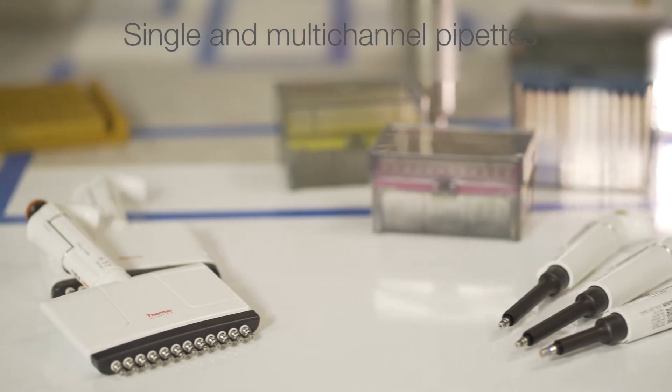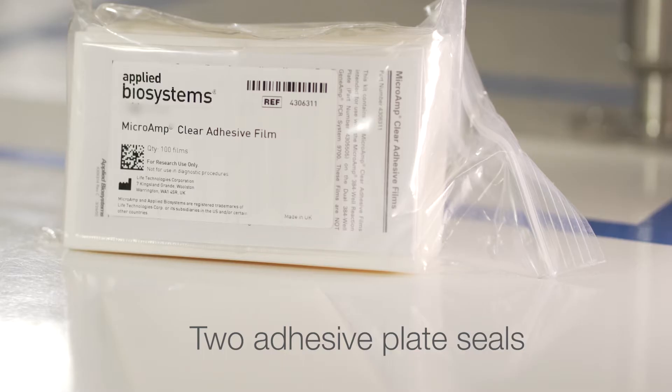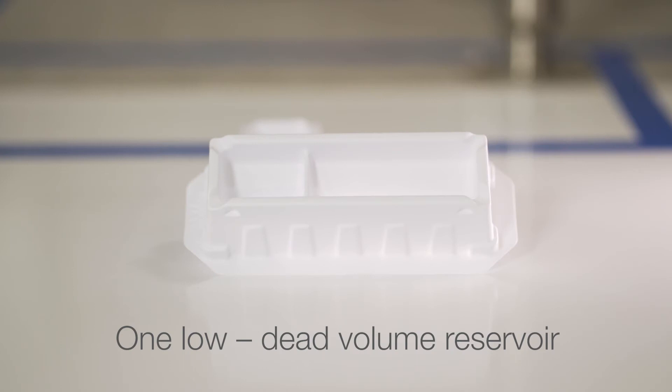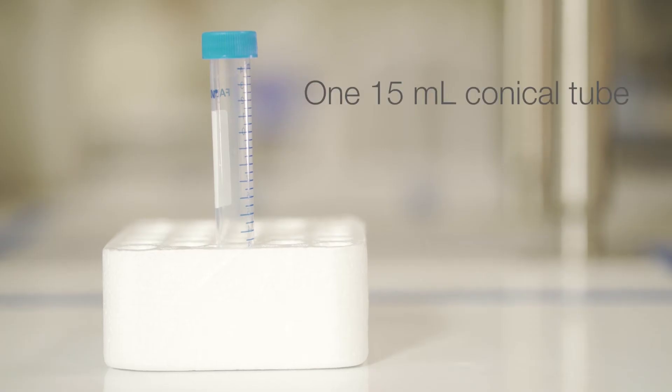Calibrated single and multi-channel pipettes, including ones capable of delivering two to five microliters. Two adhesive plate seals and one optical grade PCR seal. One low dead volume reservoir designed for small volumes. One 1.5 milliliter microcentrifuge tube and a 15 milliliter conical tube.